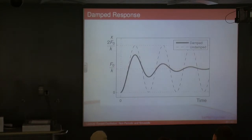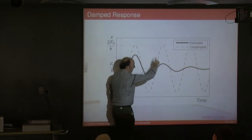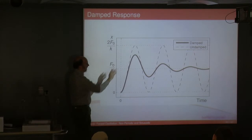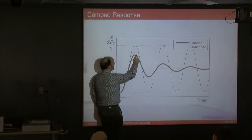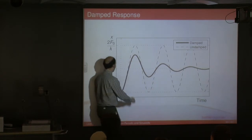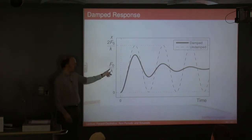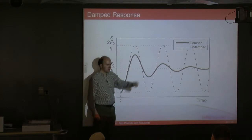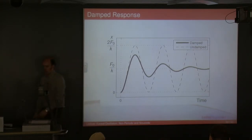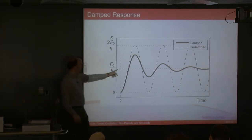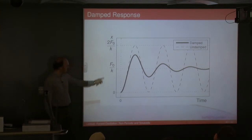If we plot that, you end up with this sort of response. In the undamped case you apply the constant force and it oscillates between zero and 2F₀/k forever. In the damped case it won't overshoot as much and the oscillation settles down to the static deflection F₀/k. Think about a car lifted off the ground — you put it down and it oscillates then damps out. If your dampers are working well, you won't get much overshoot.